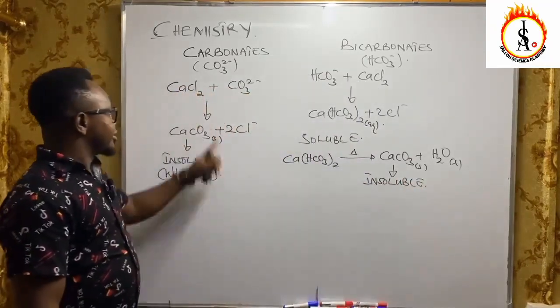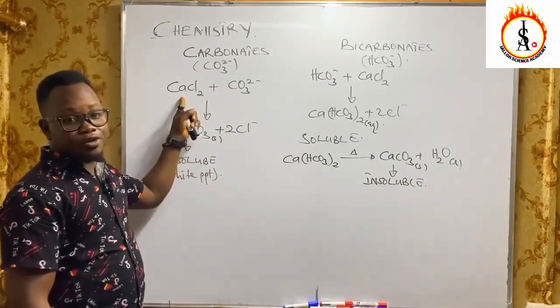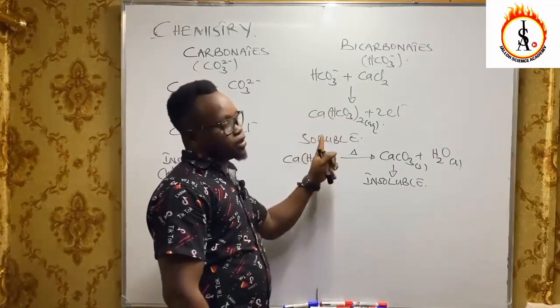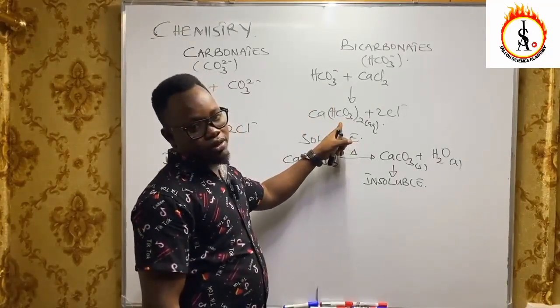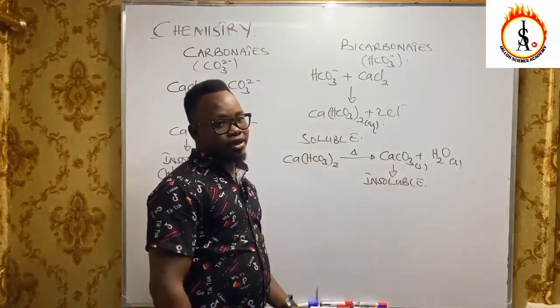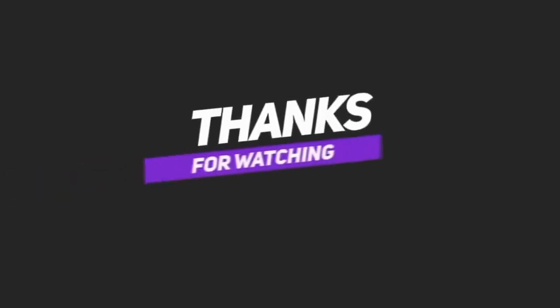So meaning carbonates precipitate calcium carbonate with calcium chloride directly, whereas bicarbonates don't precipitate calcium carbonate directly. They first of all produce calcium bicarbonate and then when this is heated you then have calcium carbonate that is formed.